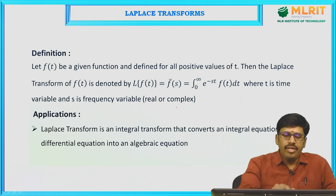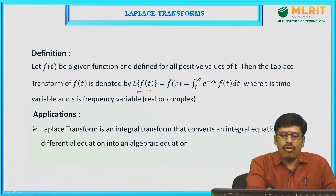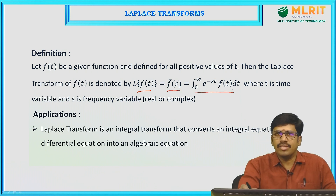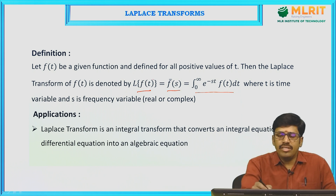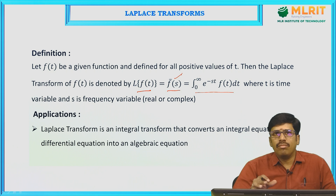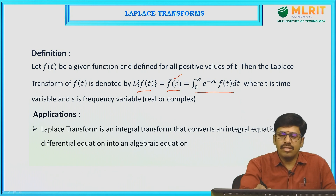f(t) is a function of t defined for all positive values of t. The Laplace transform of f(t) is denoted L{f(t)}, and is defined as f̄(s) = integral from 0 to infinity of e^(−st) f(t) dt. This is a function of t being transformed into a function of s. Here t is the time domain and s is the frequency domain, so this Laplace transform is an integral transform which transforms the time domain to the frequency domain.